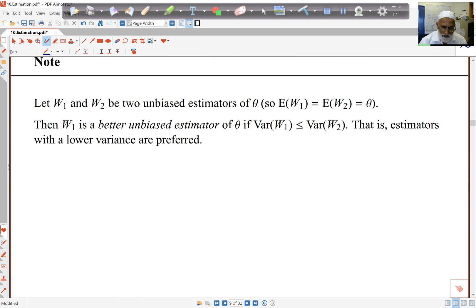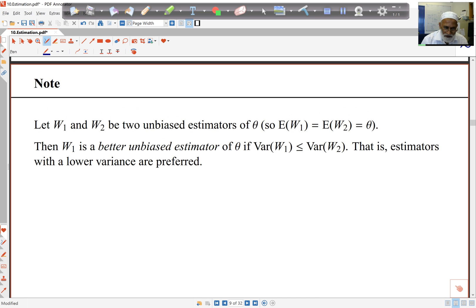Now, some ideas of comparing estimators. If I've got two estimators, W1 and W2, and they're both unbiased estimators - that means that on average the value of these things, the mean of these things is theta - then we'd say that one of them, W1, is a better unbiased estimator of theta if it has a lower variance. So if the variance of W1 is at least less than or equal to the variance of W2, we'd say that W1 is a better estimator.